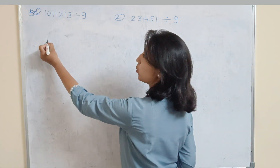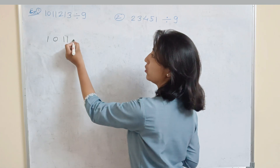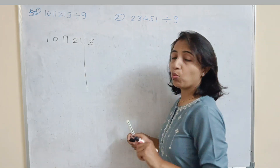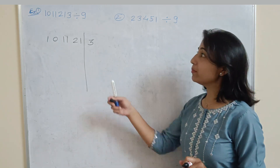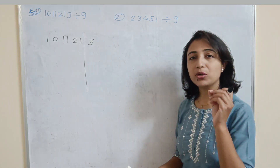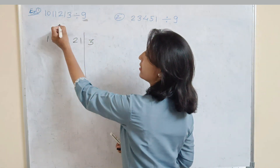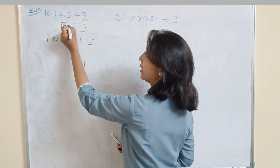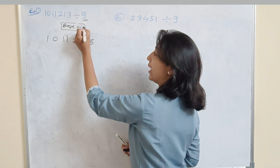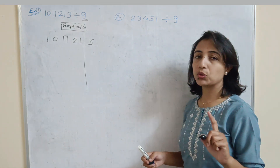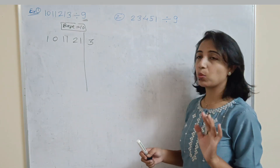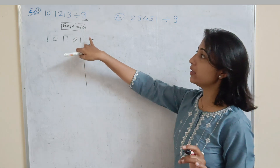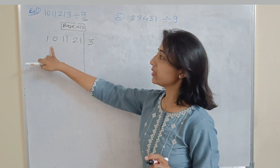Our first example is 101121. We write 3 digits on the left and 1 digit on the right-hand side. We do this because 9 is near to the base 10, and since 10 contains only one zero, the remainder is at most a single digit. That's why we write the last single digit on the right side and the remaining digits on the left side.